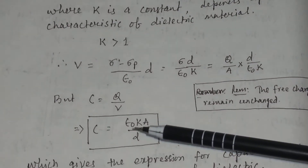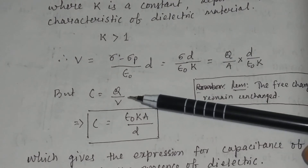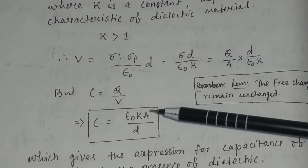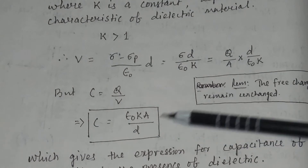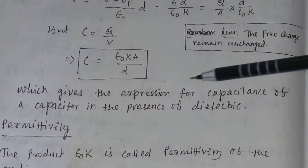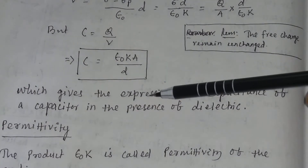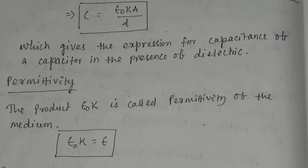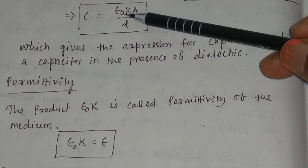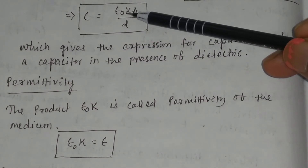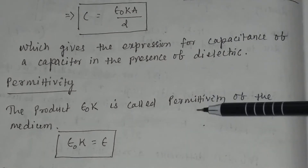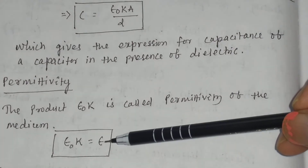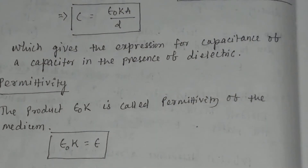Since C equals q divided by V, C will equal epsilon 0 k A divided by d. This gives the expression for the capacitance of a capacitor in the presence of a dielectric. The product epsilon 0 k is called the permittivity of the medium, denoted epsilon. So epsilon 0 k equals epsilon, which is the permittivity of the medium.